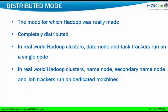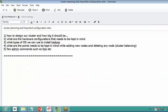The last one is distributed mode — the mode for which Hadoop was really made. There are no dependencies among components; everything runs on its own JVM and multiple threads can be executed at the same time. So it is completely distributed. In real-world Hadoop clusters, data nodes and task trackers run on a single node. All the remaining processes run on independent nodes — in the sense, independent machines. Name node, secondary name node, and job trackers run on dedicated machines.